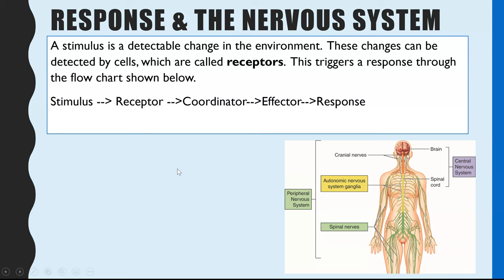This falls into the nervous system part of the specification, because receptors are the cells which detect stimuli. A stimulus is a detectable change in the environment, and these receptors which detect those changes can then trigger a response, and it typically would follow this flow diagram.